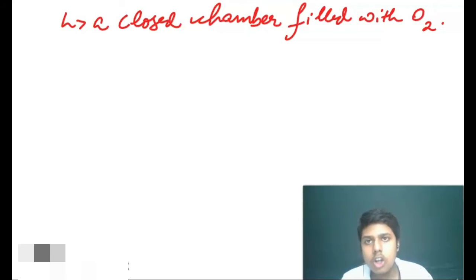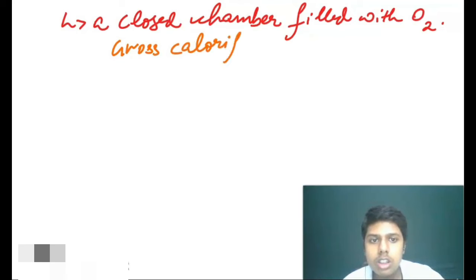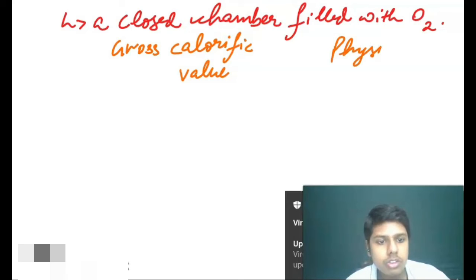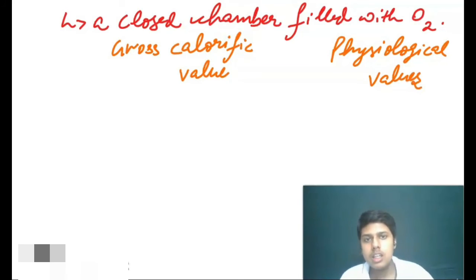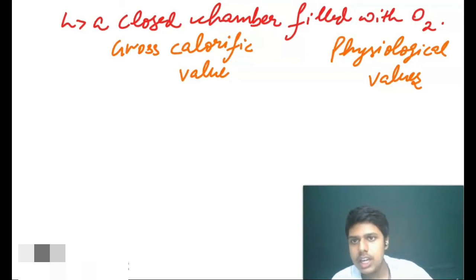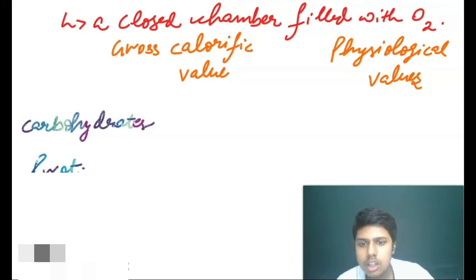Here we will be talking about the gross calorific values and the physiological values. I will divide gross calorific and physiological values into two parts. First we will write the gross calorific value, and alongside we will write the physiological values — for carbohydrates, proteins, and fats separately.